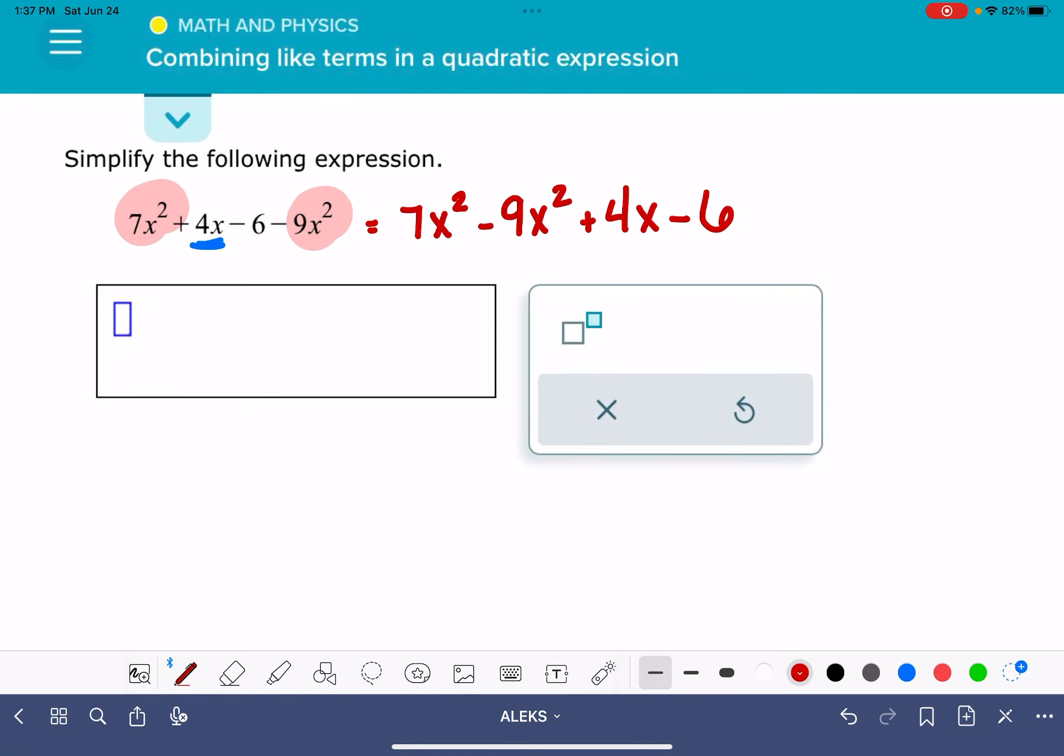The terms that have the same variable, so these x squared terms, they can be combined together, added together.